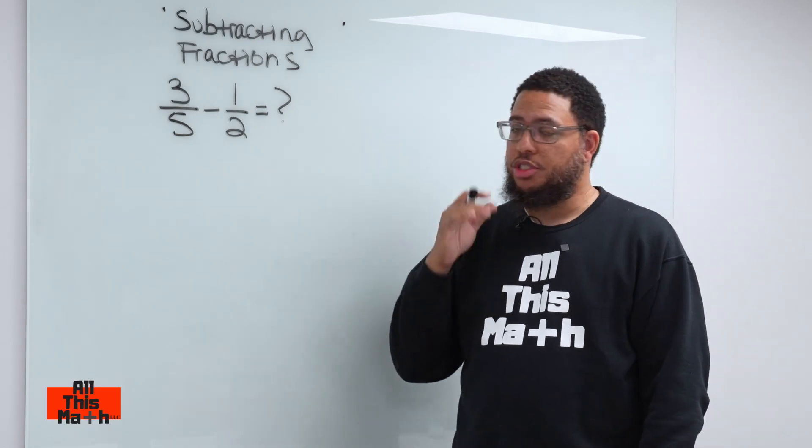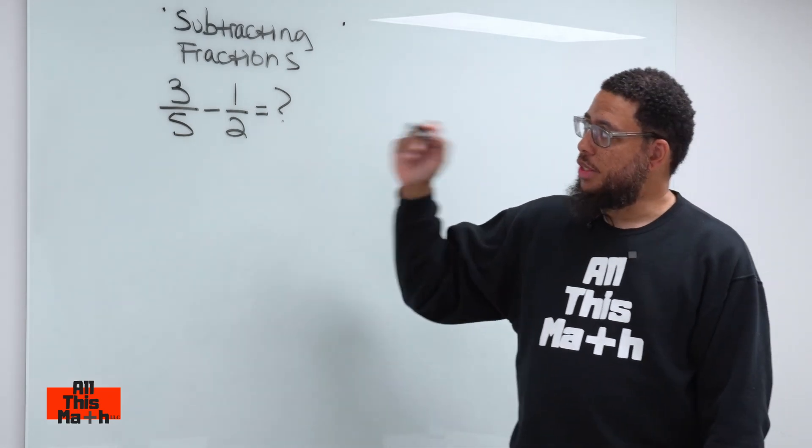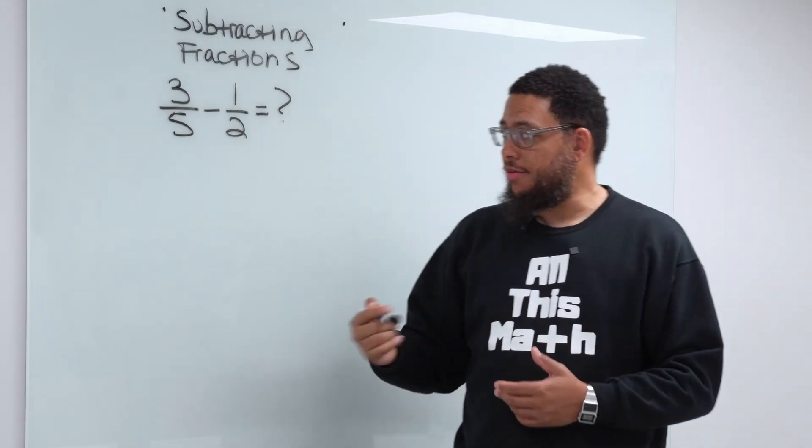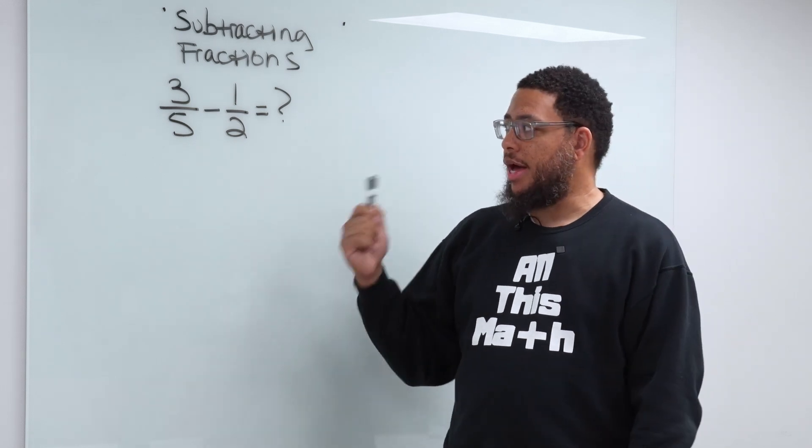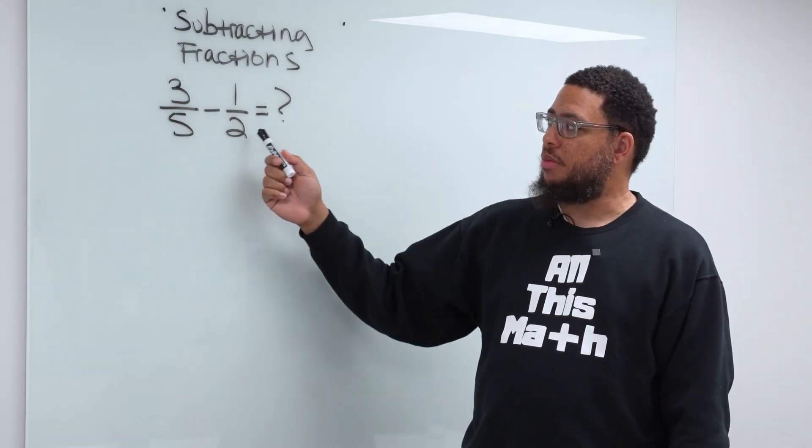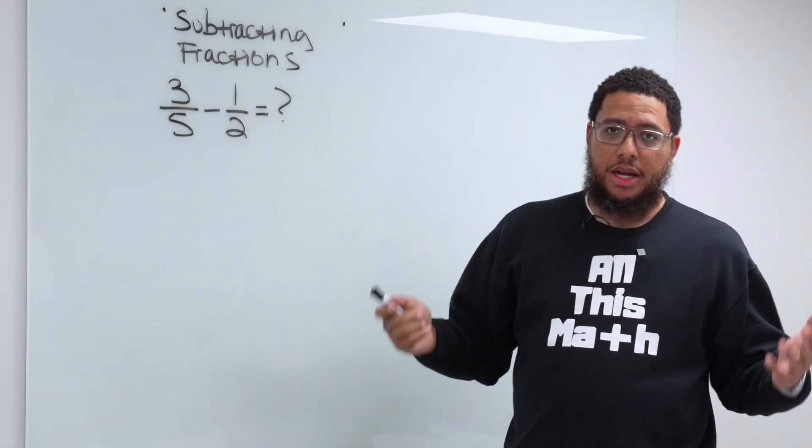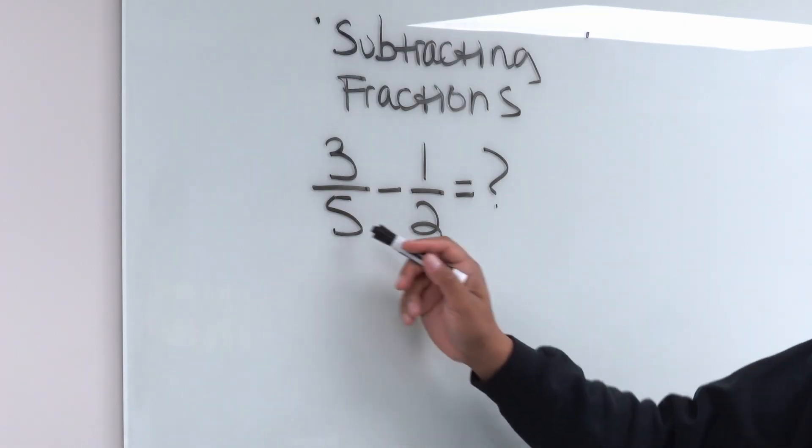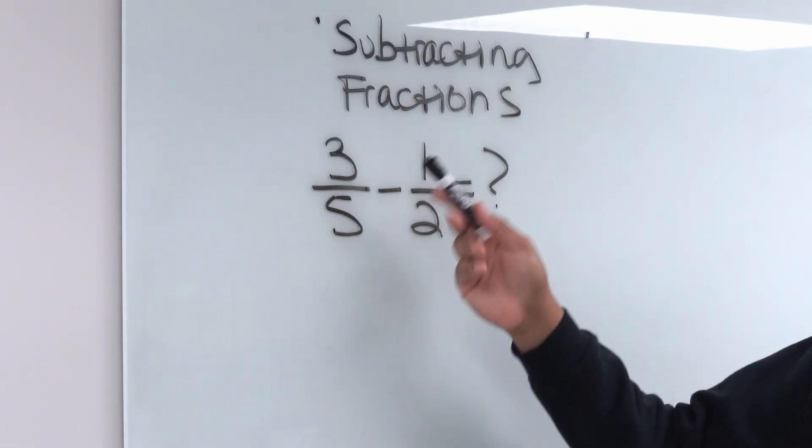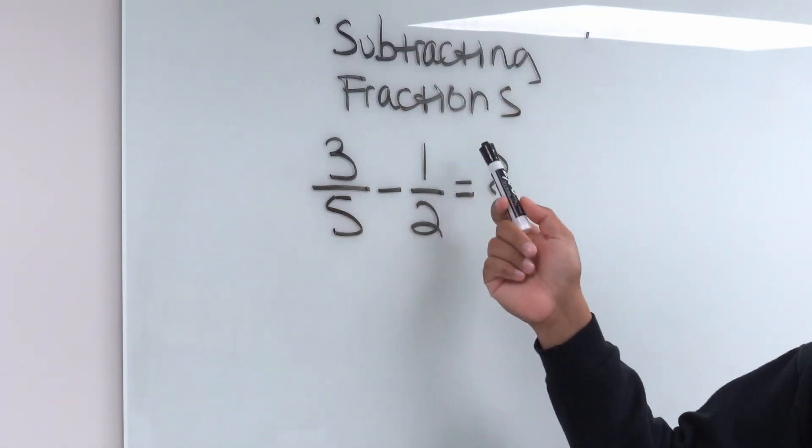Now, this skill is kind of tricky, but it's very important. When we subtract or add fractions, we have to make sure that we have what are called common denominators. Common meaning the denominators have to be the same. Also, you need to know what a denominator is. The denominator is the bottom number in a fraction. The numerator is the top number in the fraction.